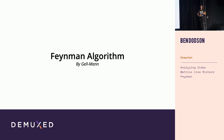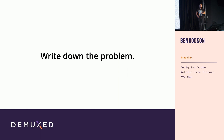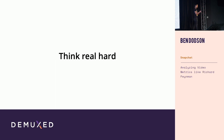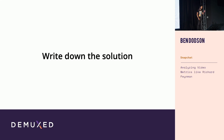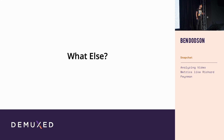This is how Feynman solved complex problems in quantum electrodynamics. The Feynman algorithm is: step one, write down the problem. Step two — this is a very important step — think real hard. And step three, the most critical step, write down the solution. This is a highly effective algorithm, but it has a problem, which is it has a dependency on being Richard Feynman. So what else can we use?